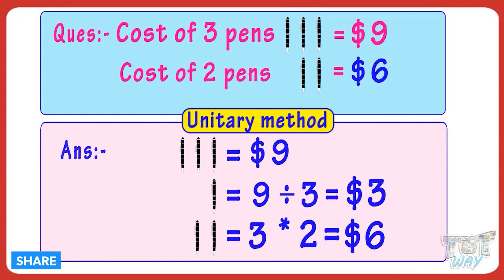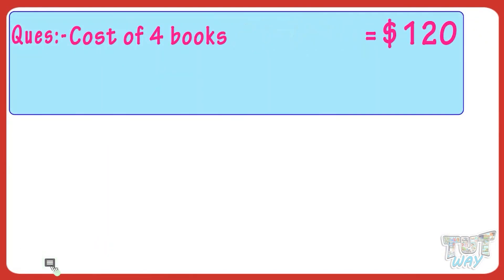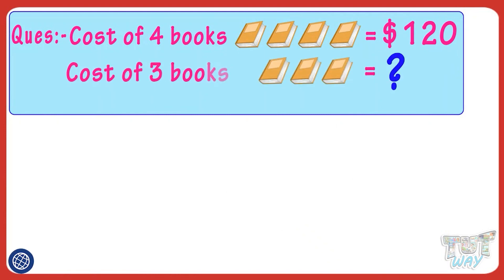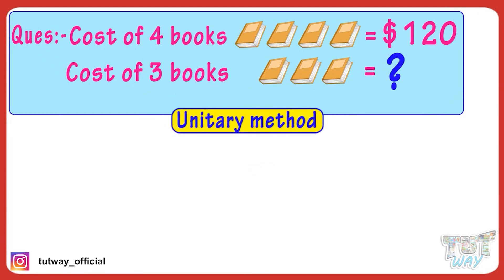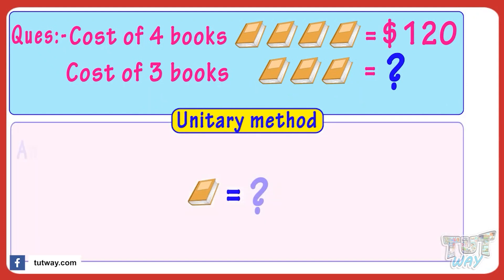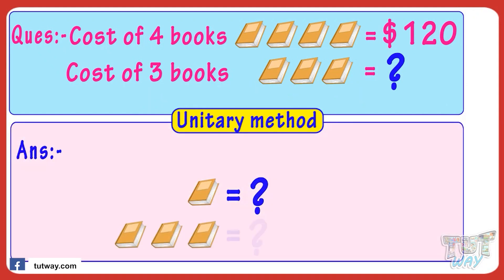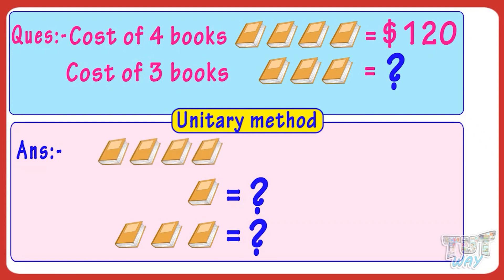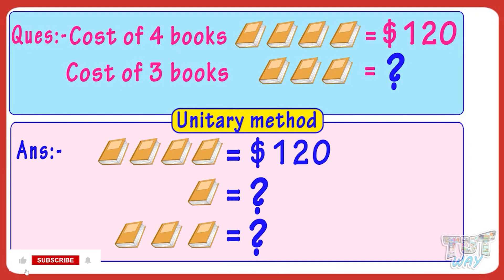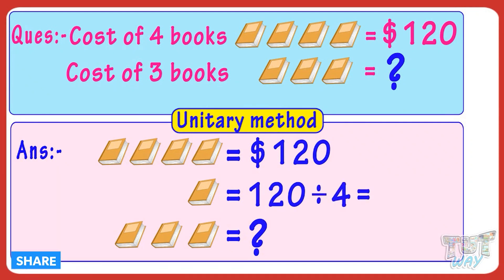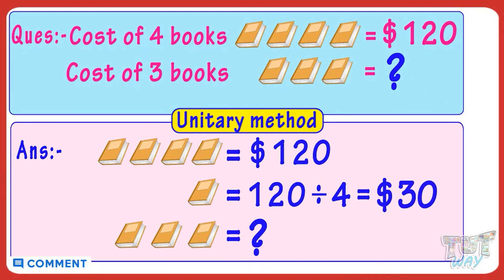Now let's take another example. The cost of four books is $120. Then what is the cost of three books? Let's find it out with the help of unitary method — first we will find the cost of one book and then the cost of three books. If the cost of four books is $120, then the cost of one book is $120 divided by 4, which equals $30.